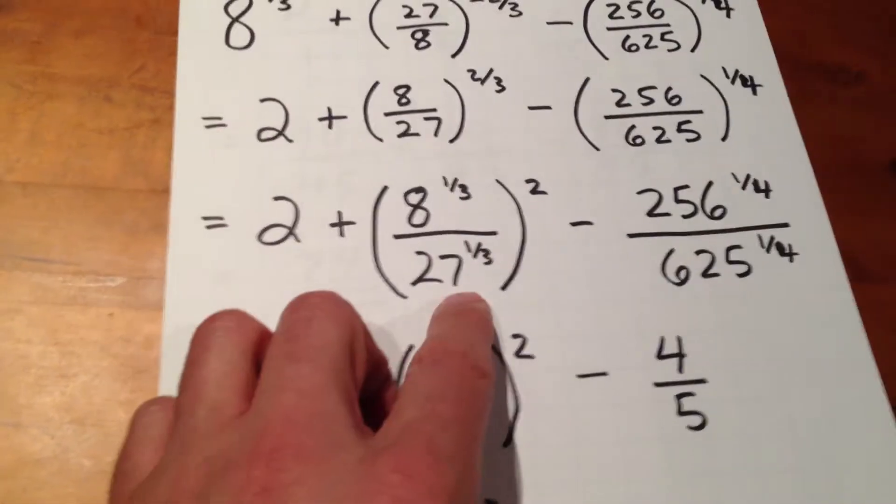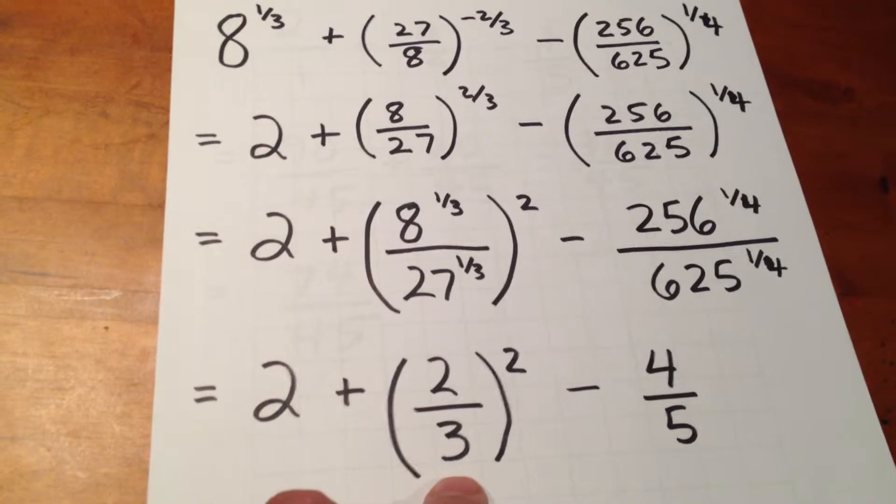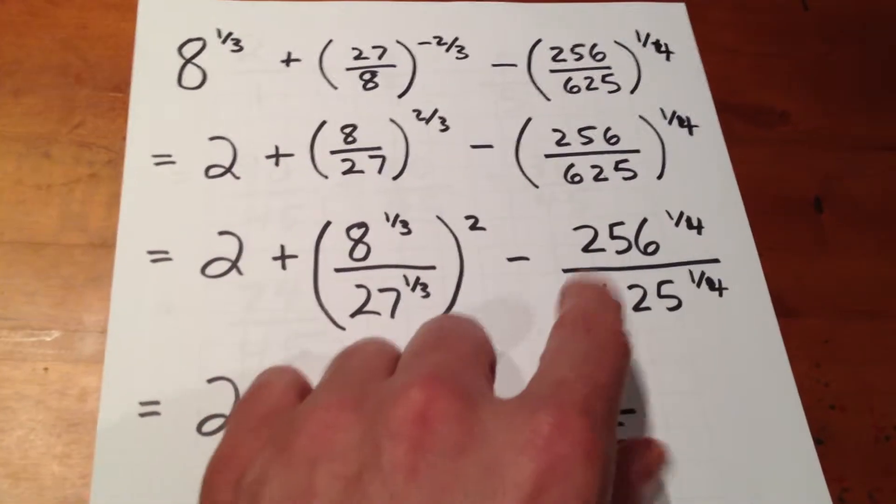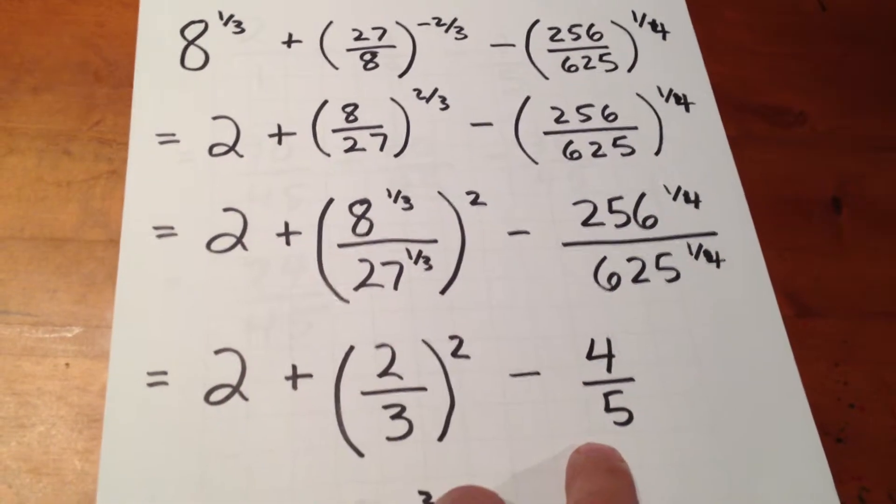8 to the one-third is 2 and 27 to the one-third is 3, but we still have to square it. The fourth root of 256 is 4 and the fourth root of 625 is 5.